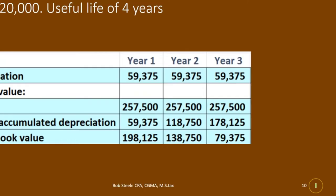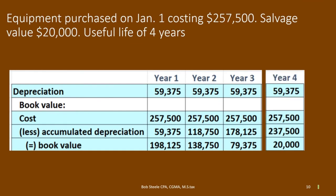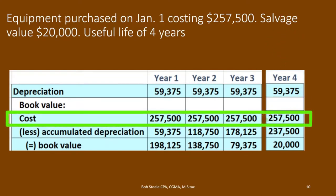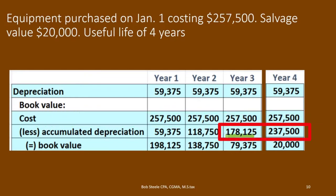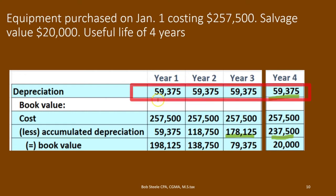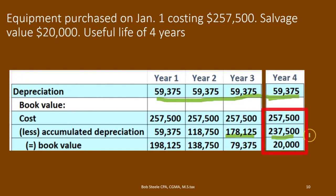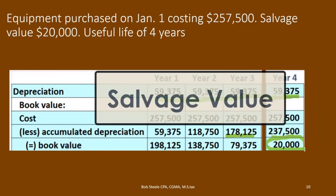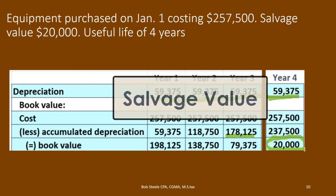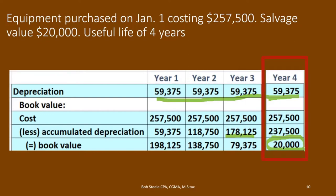Year four is the final year and looks much the same — another depreciation expense of $59,375. The cost of $257,500 is the same. The accumulated depreciation is the prior year's $178,125 plus the current year's $59,375, giving $237,500. Alternatively, $59,375 times four equals $237,500. The book value is then $257,500 less $237,500, which equals $20,000. We've seen that number before — that is the salvage value. At the end of the four-year useful life, we've depreciated it down to what we estimated we can scrap it for.